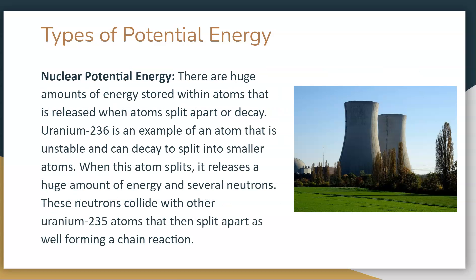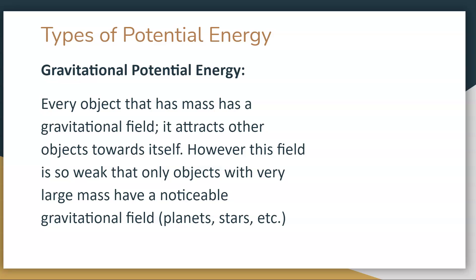Another one we talked about earlier is nuclear potential energy. There's lots of energy stored within atoms that is released when they split apart or decay. Uranium-236 is an example of an atom that is unstable. As it decays and splits into smaller atoms, it releases a lot of energy and several neutrons. These neutrons collide with other uranium-235 atoms that then split apart as well, forming a chain reaction. These are just a couple types, but the one we are going to focus on for this video is gravitational potential energy.